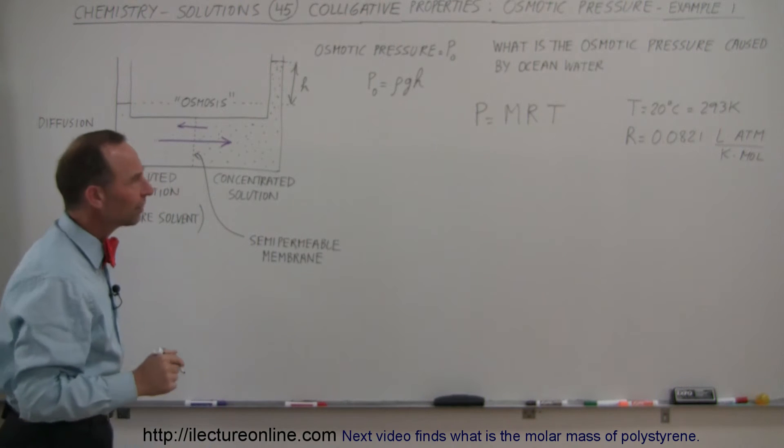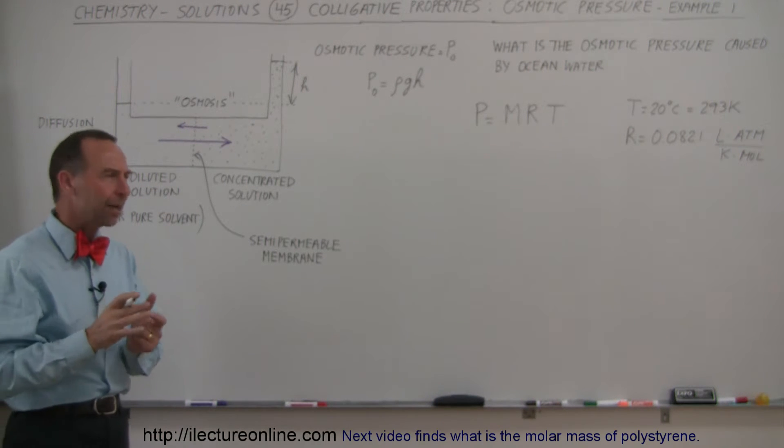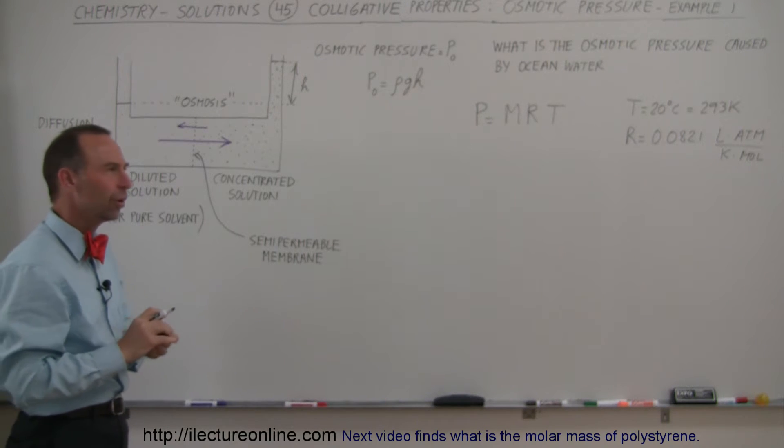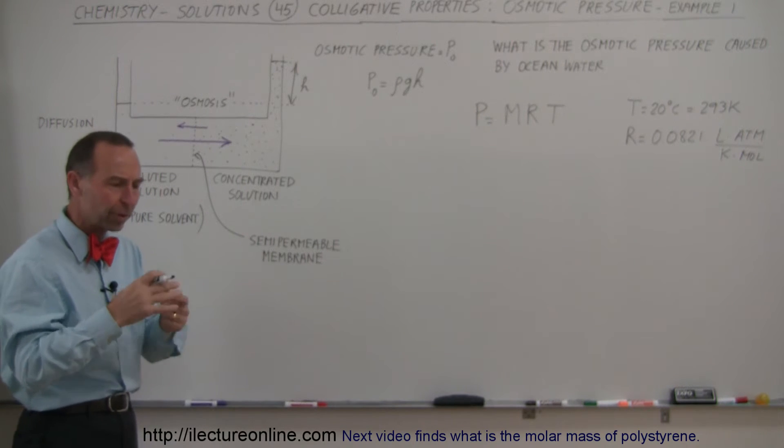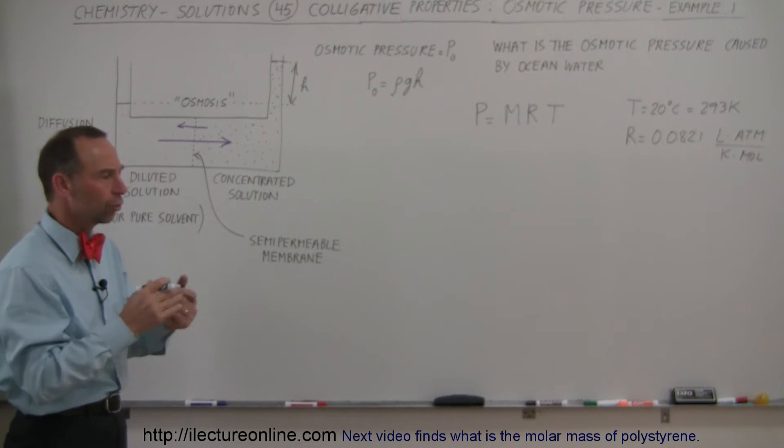So all we have to do now is find the molarity of seawater. Now, we know that by mass, if you take one liter of seawater, you have about 3.5% salt in there. So there's mostly salt, mostly sodium chloride, but some other salts mixed with it. So just for simplicity, let's assume that it's all sodium chloride.